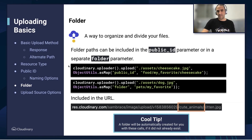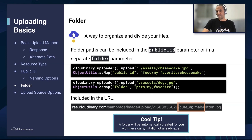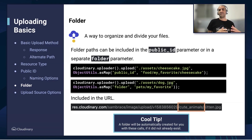A folder can be part of the public ID that you give, separated by the slash character. Looking at the example, we're uploading cheesecake.jpeg and giving it a public ID with three parts separated by slashes, which means it will be in a folder called food, subfolder my favorite, and there we'll have the cheesecake. Alternatively, you can use the folder key in the options map and tell Cloudinary which folder to put the asset in, like pets slash my favorite. The folders are shown in the URL path, and importantly, you don't have to pre-create the folders — they'll be created for you.